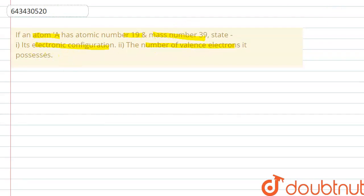In this question we have given an atom and its atomic number and mass. So the atom is A, its atomic number which is represented by Z is 19, and its mass number which is represented by A is 39.